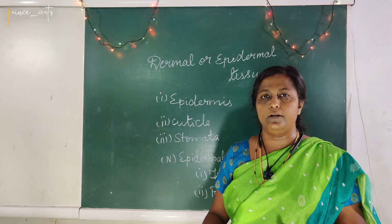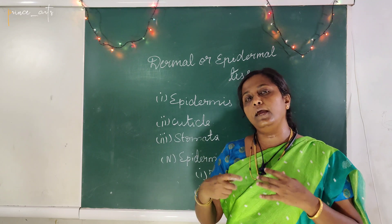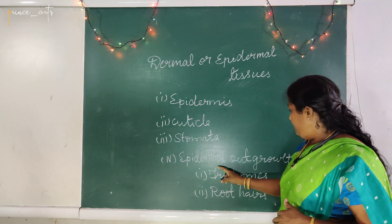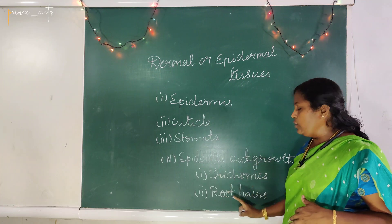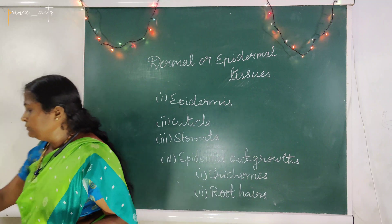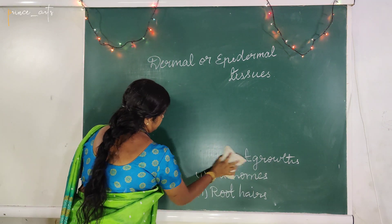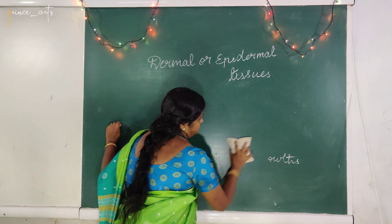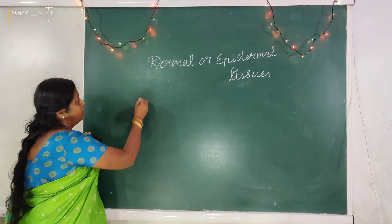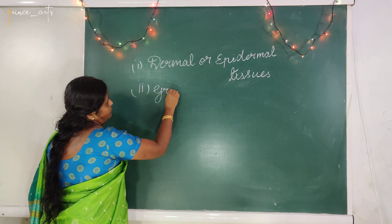Root hairs absorb water from the soil and supply it to all other parts of the plant. The second tissue system is ground tissue.